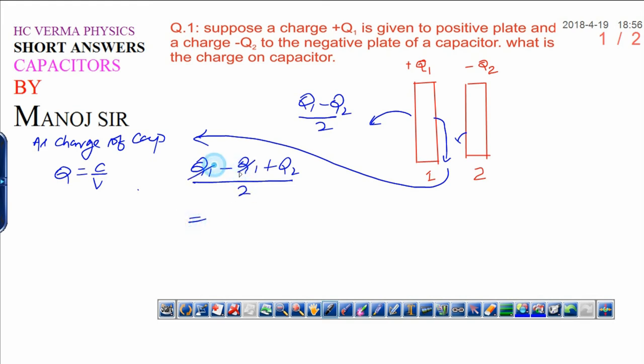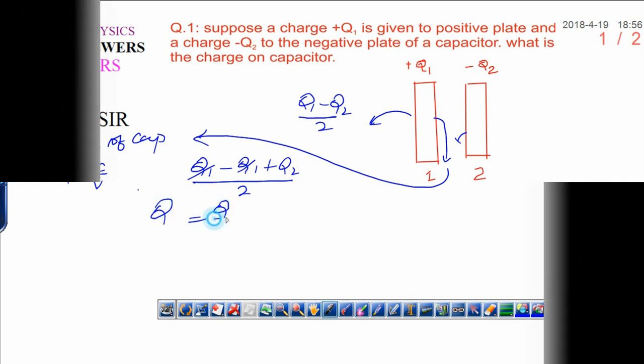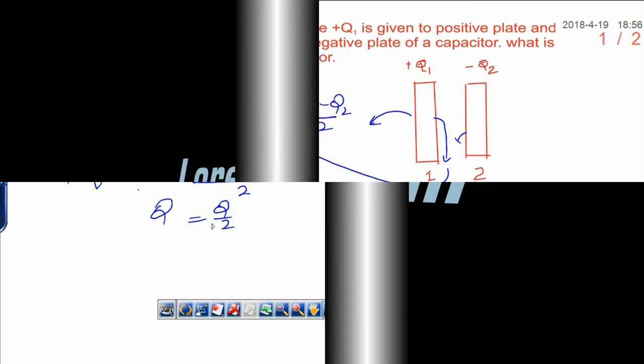It will be Q1 minus Q1 minus Q2, minus Q2 is there. Therefore, the charge on the capacitor is Q2. So the charge of the capacitor, Q2, is the answer.